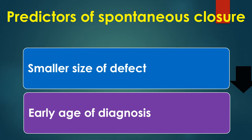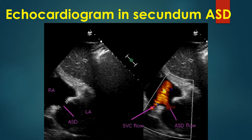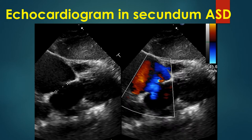Smaller size of defect and early age of diagnosis are important predictors of spontaneous closure. ASDs less than 3 mm diagnosed before 3 months of age are expected to close spontaneously. ASDs more than 8 mm in diameter are unlikely to close, though cases of 10 mm secundum ASD closing spontaneously within 1 year are on record. Reports of both decrease and increase in ASD size over time exist. On echocardiogram, a 15 mm ASD is seen in subcoastal view, with left to right shunt in red and right to left shunt in blue on colour Doppler. Transient right to left shunt can occur even without severe pulmonary hypertension due to phasic fluctuation of atrial pressures with respiration and Valsalva maneuver.